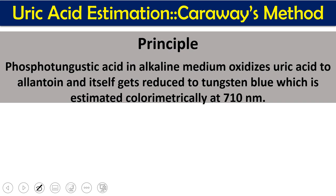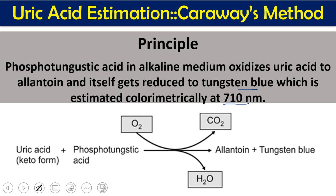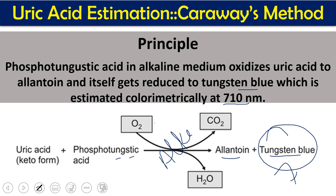The second method is the Caraway method, also called the phosphotungstic acid method. The principle is that phosphotungstic acid in an alkaline medium oxidizes uric acid to allantoin. This is similar to the first reaction of the uricase method, except phosphotungstic acid replaces uricase. During this reaction, phosphotungstic acid is itself reduced to tungstin blue, which is measured at 710 nanometers.